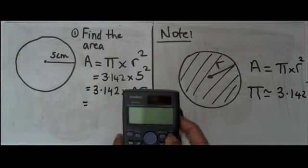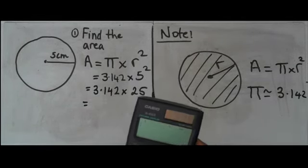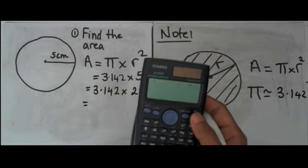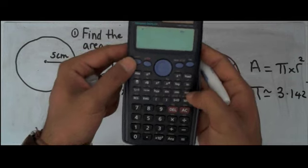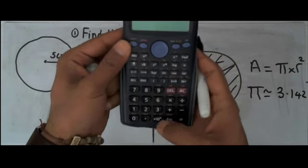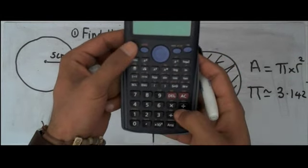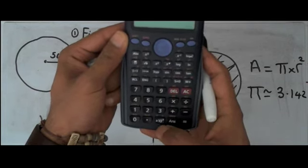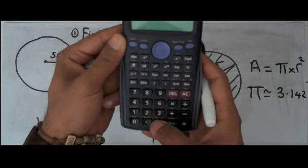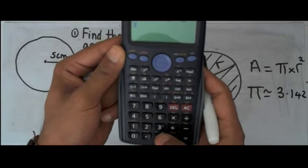And now all I have to do is take my calculator. So on your scientific calculator, you have the pi button which is right at the bottom here. So if you press shift and press the x times 10 to the power of x, it gives you the pi symbol.